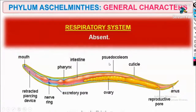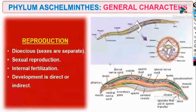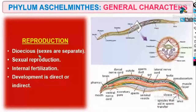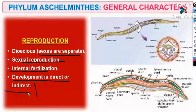No respiratory system and no circulatory system is present, even though organ system level starts here. They are dioecious — that is, the sexes are separate. Sexual reproduction occurs, internal fertilization, and development may be direct or indirect — in some cases there will be larvae and in some cases there will be no larvae.